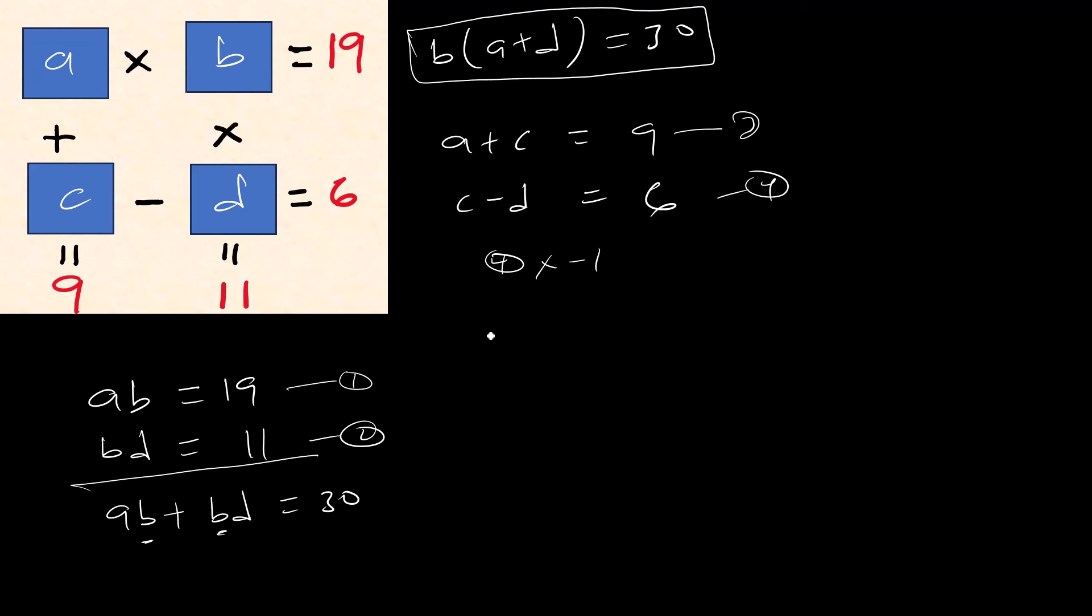And so we can multiply equation 4 by negative 1, so we have d minus c equals to minus 6. That is the fifth equation. So equation 3 plus 5, so we have a plus c, then plus d minus c.